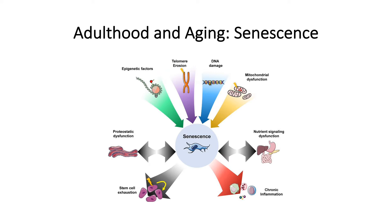That has to do with dietary habits. Senescence input variables from the environment can also include what kind of activity or level of activity a person is engaged in, what their aerobic health is. These are going to become really important in looking at not only anti-aging but disease prevention. It's an important topic, especially for nurses and nurse practitioners that have that time to spend with patients looking forward.